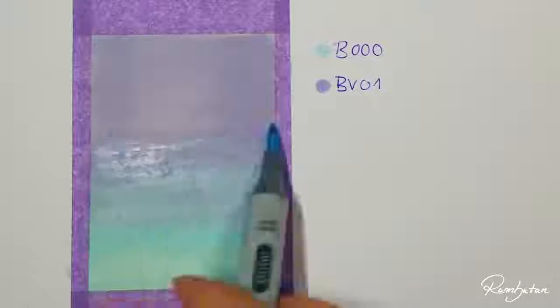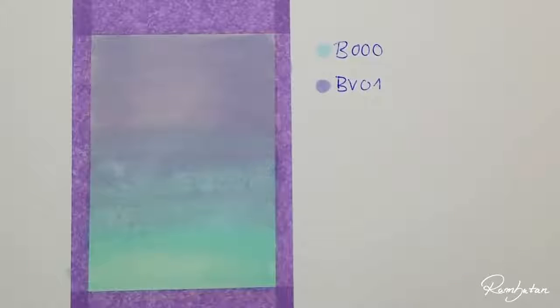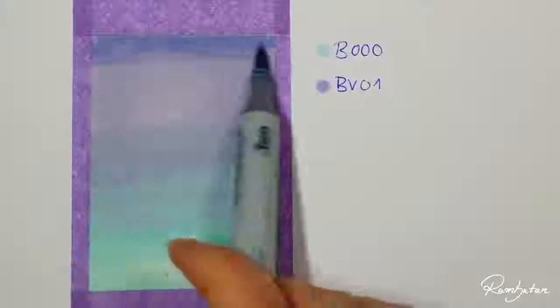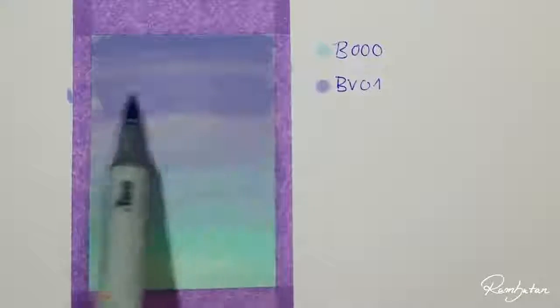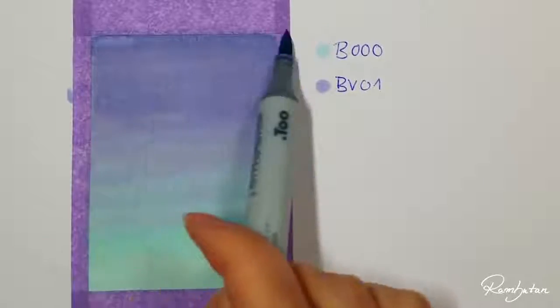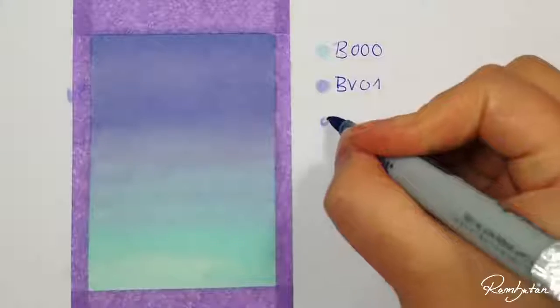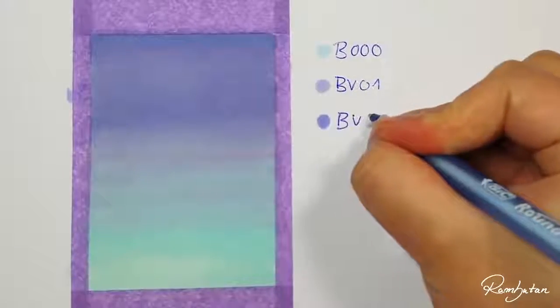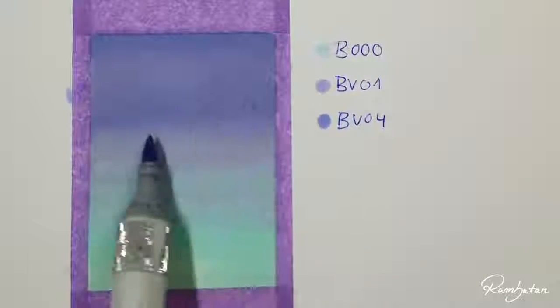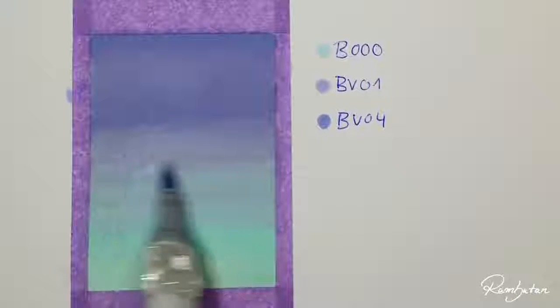Now you have a color gradient but it looks a bit weak, so now you add a bit of depth with BV04 blueberry so the gradation above looks more intense. You can blend the colors again with BV01.